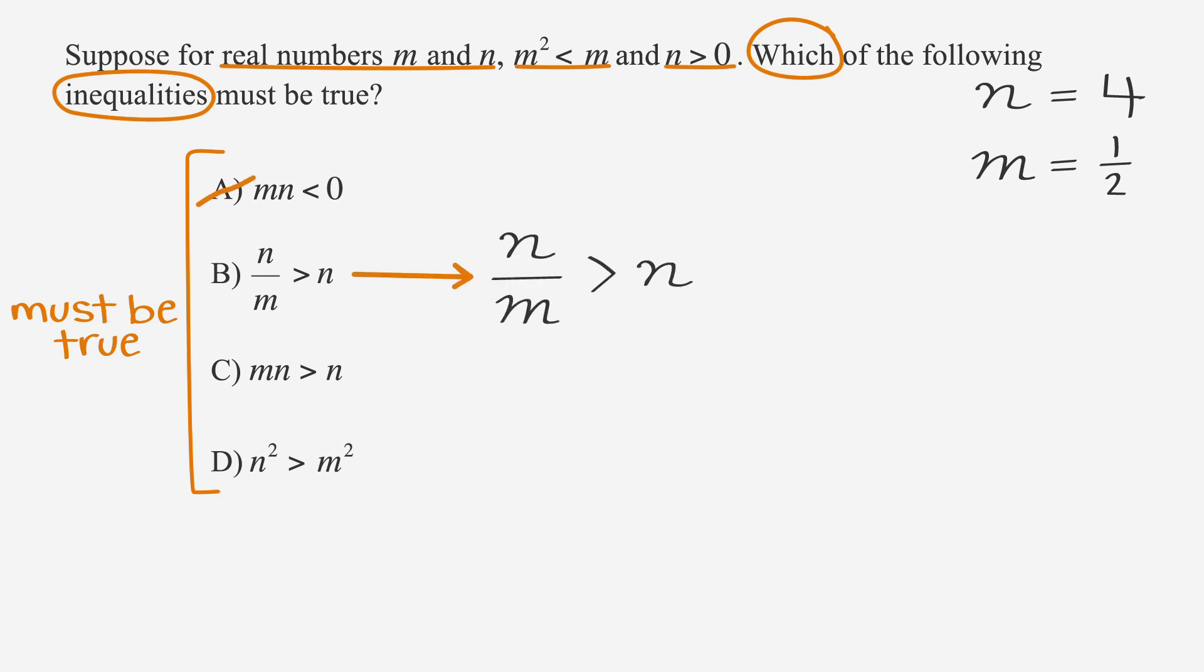Now answer choice B expresses n over m is greater than n. Let's test it out. n over m is four divided by one half, which equals eight. Eight is greater than four, so let's hang on to answer choice B.